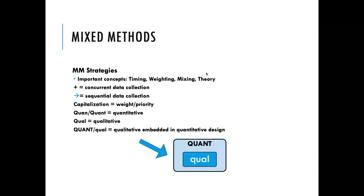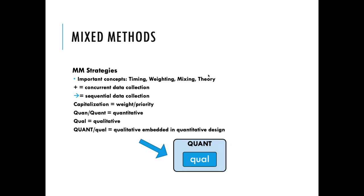Mixed methods use a lot of different symbols. A plus sign often means concurrent; an arrow means sequential. Capitalization indicates weight or priority — if 'QUANT' is in all caps in a box, that means quant is the more heavily weighted strand, whereas 'qual' in lowercase is least weighted. This particular diagram is called an embedded design: you have the qual in a box embedded within a larger quant box, visually representing an embedded quantitative design with a heavier quant perspective.